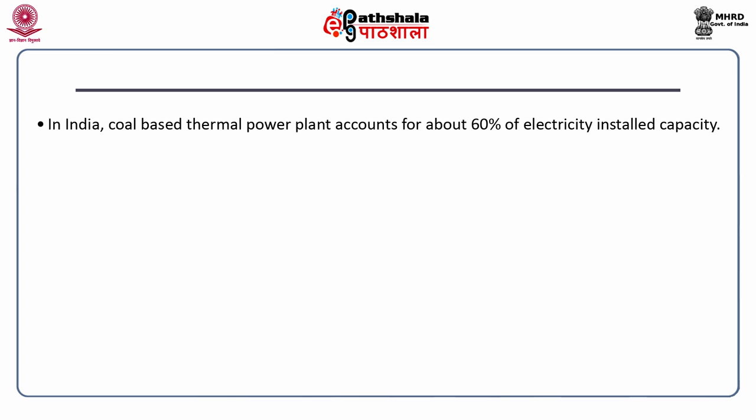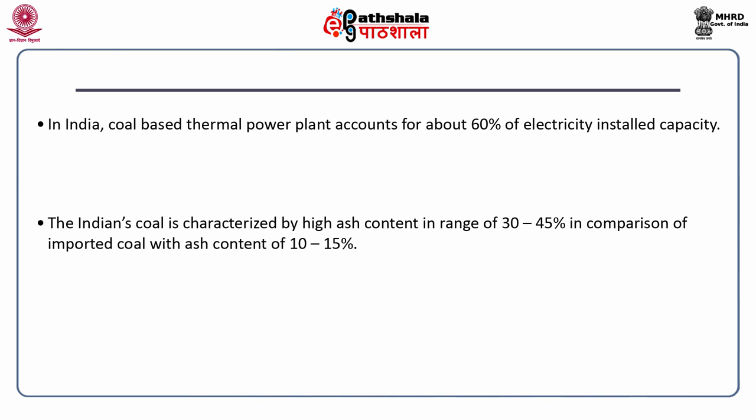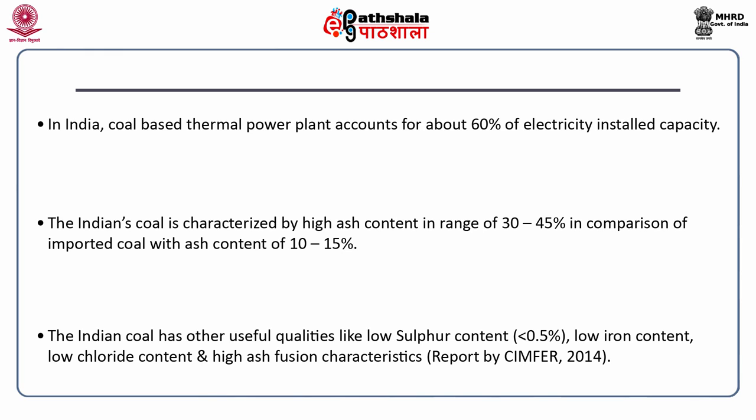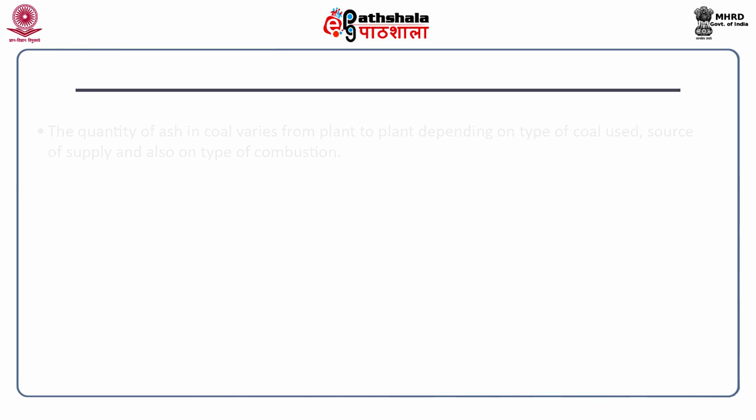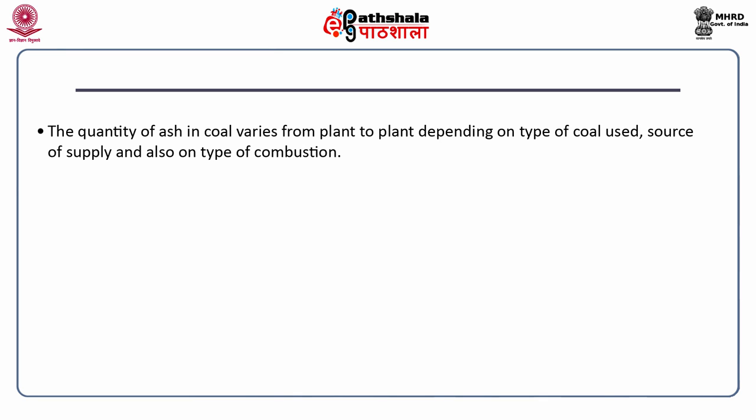In India, coal-based thermal power plants account for about 60 to 70 percent of installed electricity capacity. Indian coal is characterized by high ash content of 30 to 45 percent, compared to 10 to 15 percent in imported coal. However, Indian coal has useful qualities: low sulfur content (less than 0.5%), low iron content, low chloride content, and high ash fusion characteristics. The quality of ash varies from plant to plant depending on coal type, source of supply, and type of combustion.